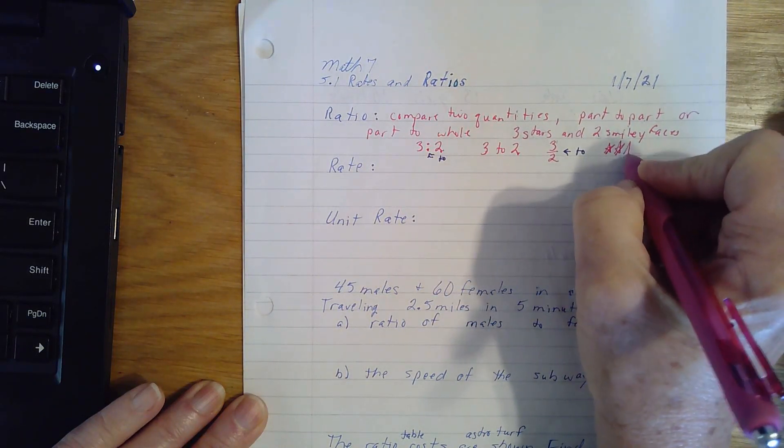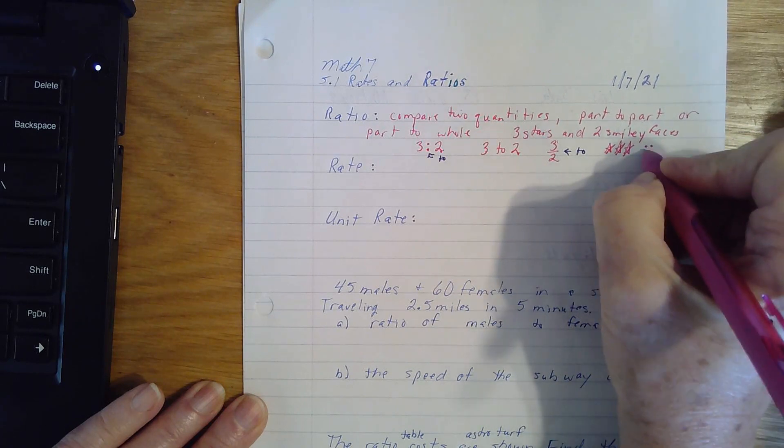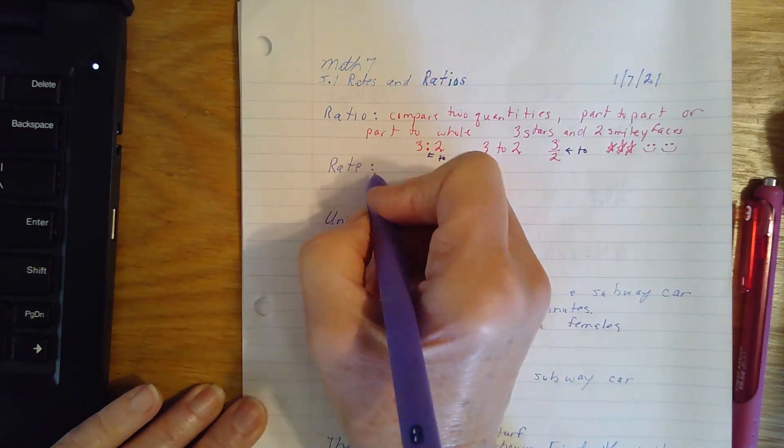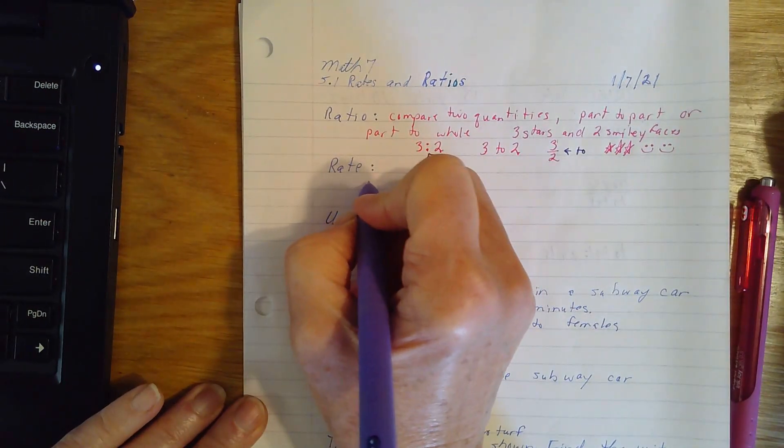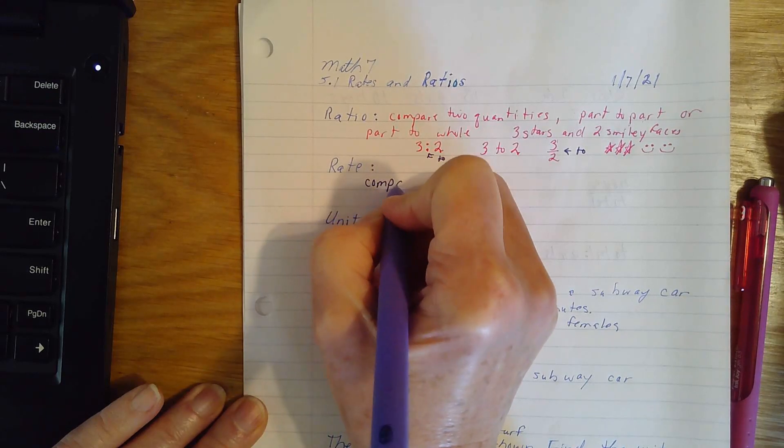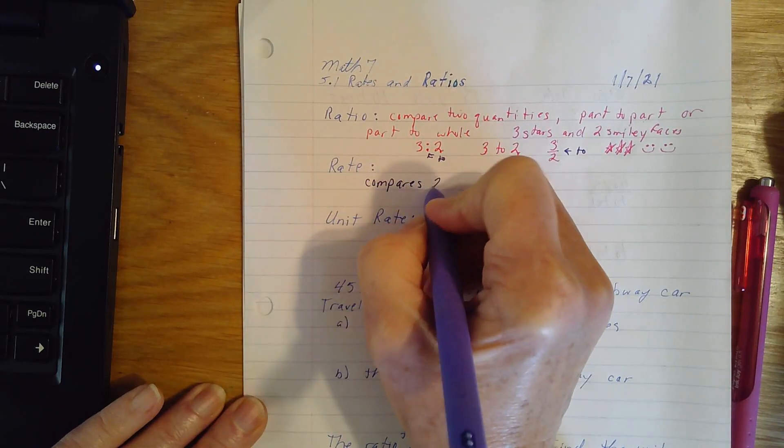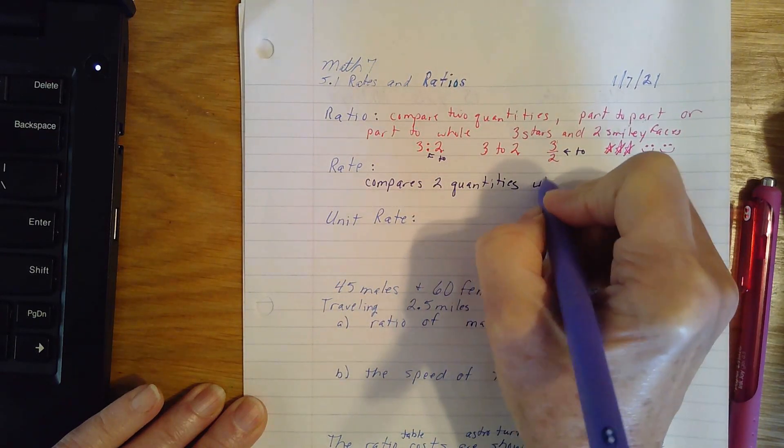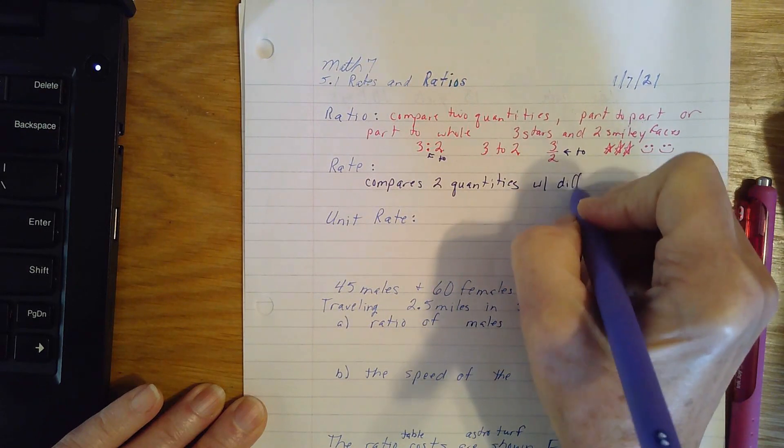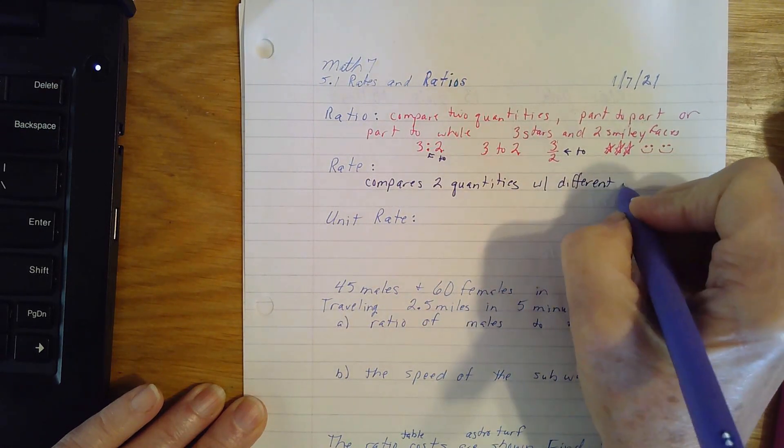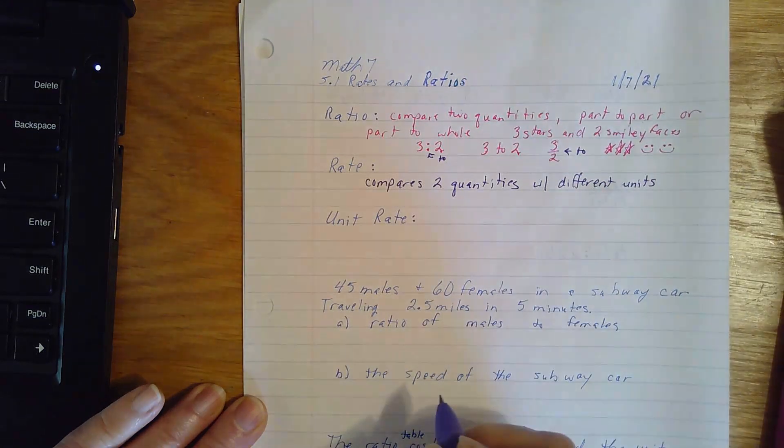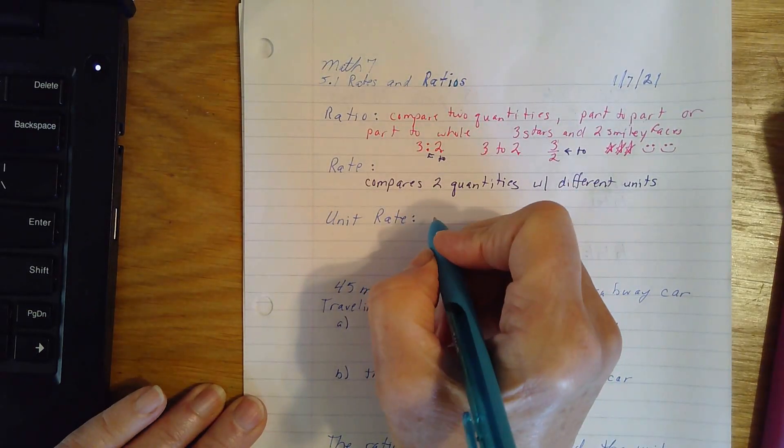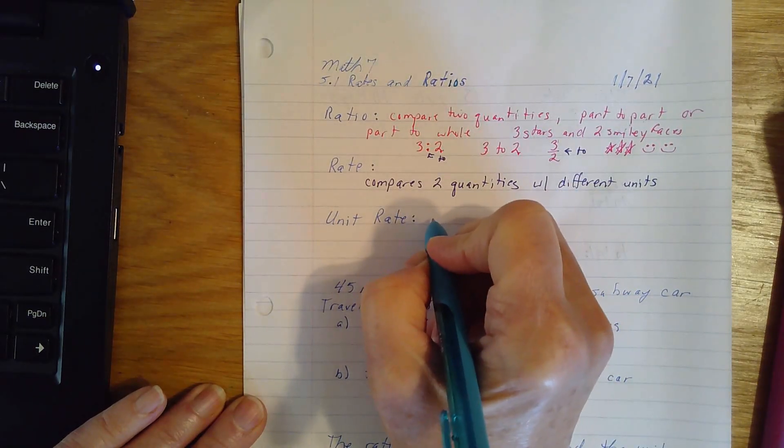And everybody would know that we were comparing three stars to two smiley faces. A rate compares two quantities with different units. A unit rate.